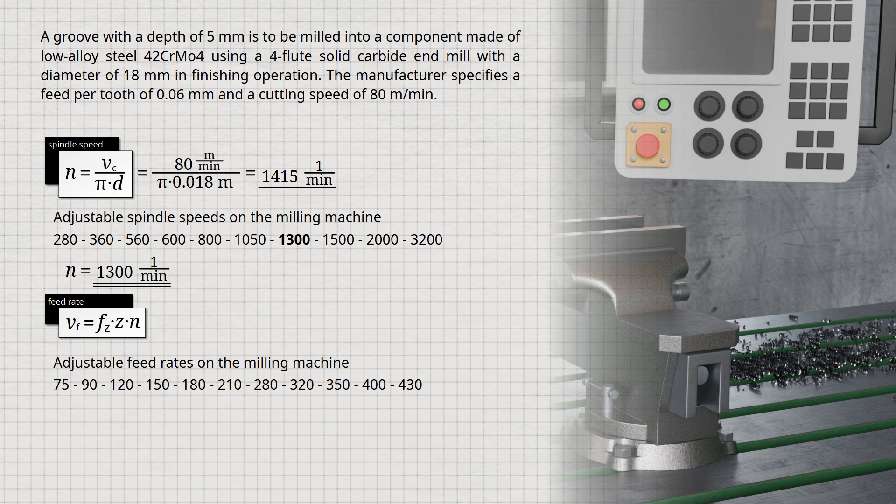Using this speed at which the actual milling will later take place, we can now calculate the required feed rate with a feed per tooth Fz equals 0.06 millimeters and a number of cutting edges Z equals 4. Inserting these values yields a theoretical feed rate of Vf equals 312 millimeters per minute.